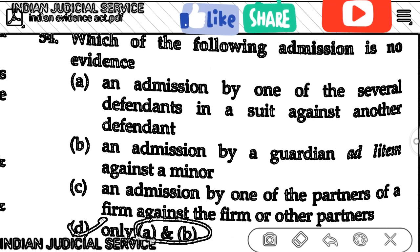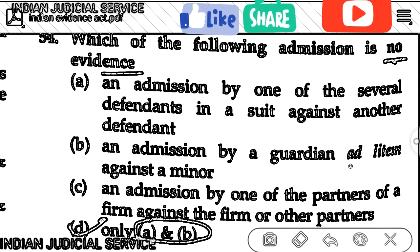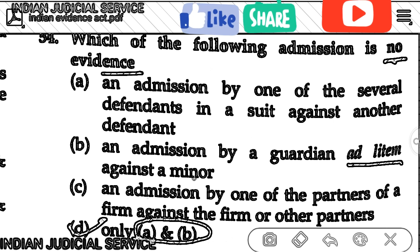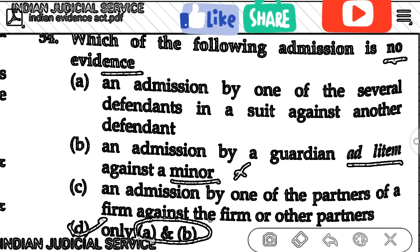To clarify question 54: Admission by a guardian ad litem against a minor is not an admission, and admission by one partner of a firm against the firm or other partners is also not an admission.